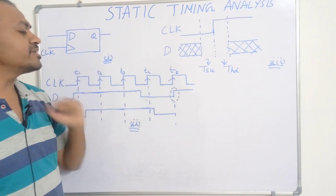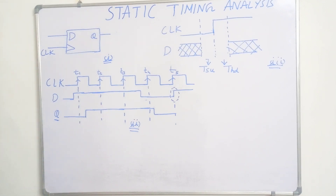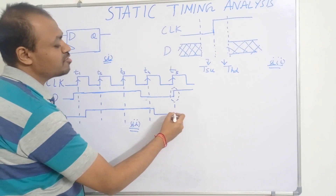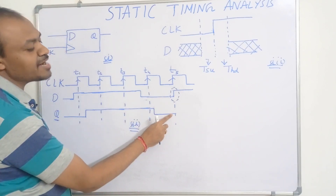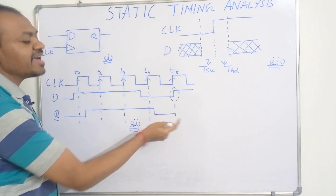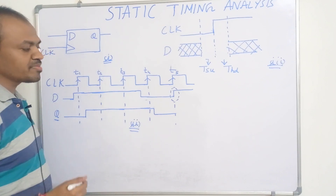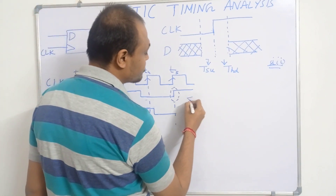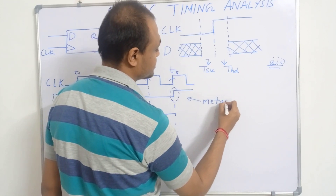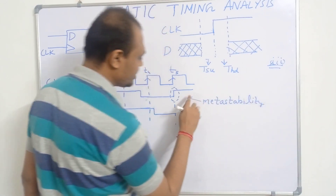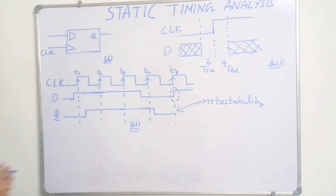When clock and input both change or both go through a transition at the same time, we cannot determine what will be the output — output will be 0 or output will be 1. At present output is 0 here. We cannot say for certainty whether output will change from 0 to 1 or remain at 0. This condition is called metastability. Output is in the condition of metastability; output is not stable. We cannot say what will be the output at time T5.